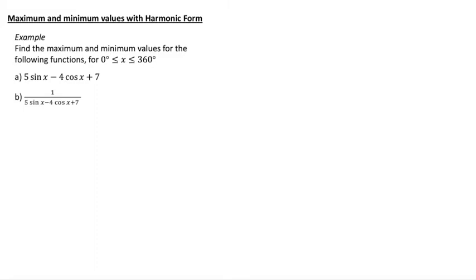Now, maximum and minimum values with harmonic form, this is quite nice as well. Find the maximum and minimum values for the following functions, for x between 0 and 360. So you'll notice they're involving the same function, one is the reciprocal of the other, so we have 5 sin x minus 4 cos x plus 7 and we have 1 over 5 sin x minus 4 cos x plus 7.